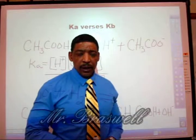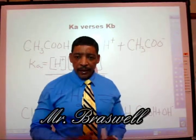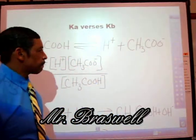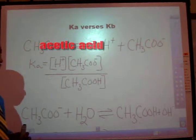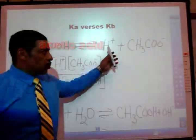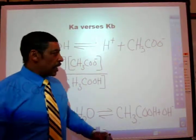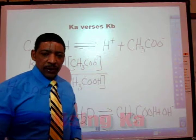Now let's take a closer look at Ka and Kb. When acetic acid dissolves in water, hydrogen ion is produced and the acetate anion is also produced.